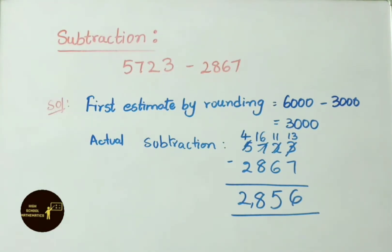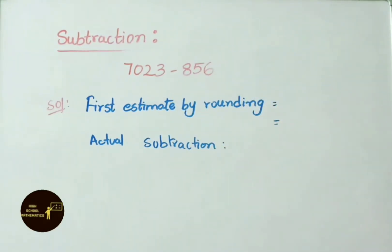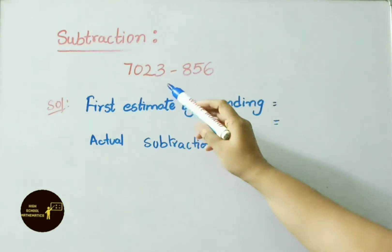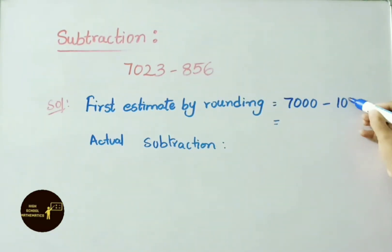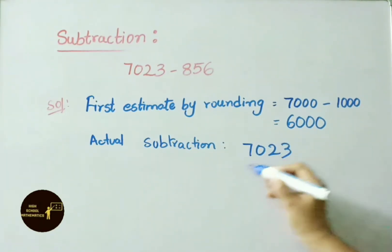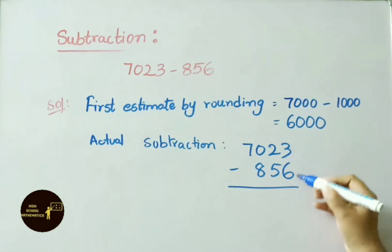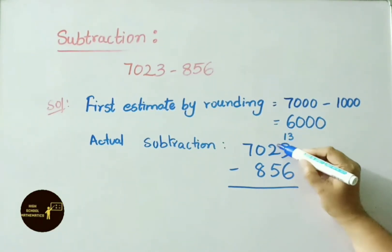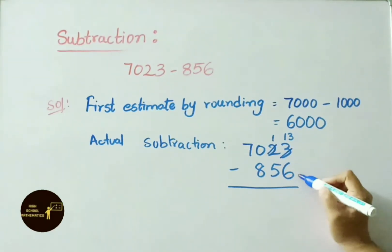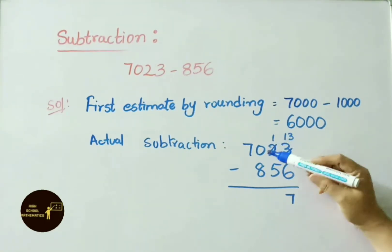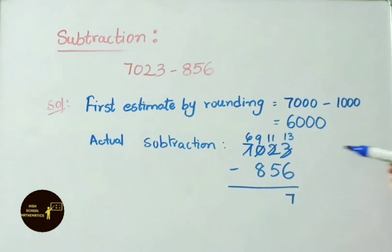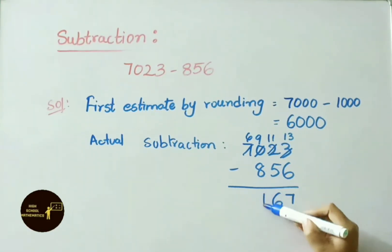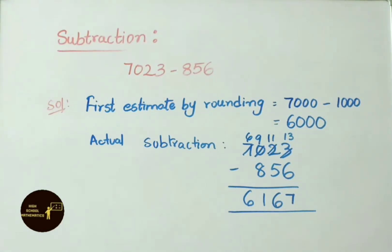Another subtraction example: 7,023 minus 856. Nearest thousand for 7,023 is 7,000, and nearest thousand for 856 is 1,000. Estimated answer is 6,000. Actual subtraction: borrow to get 13 minus 6 is 7; borrow from 7 — 7 becomes 6, 0 becomes 9, giving 11 minus 5 is 6; 9 minus 8 is 1; bring down 6. Actual answer is 6,167, and our estimation value is 6,000.